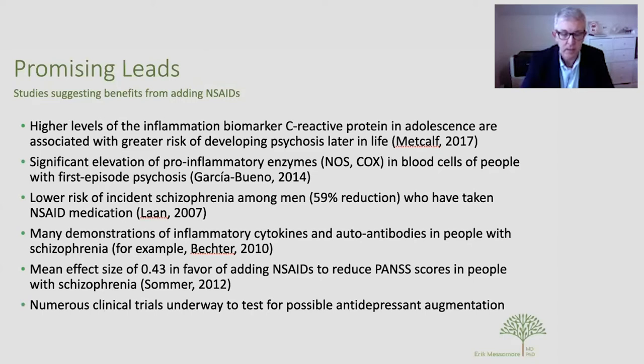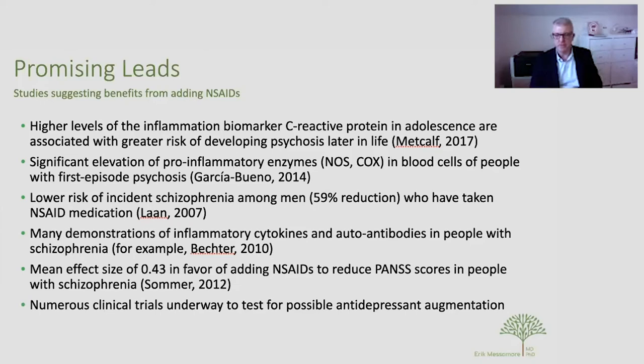Several studies show that markers of inflammation predict the development of psychosis. In a fairly large study by Metcalf and colleagues, looking at C-reactive protein — a very non-specific biomarker for inflammation — during adolescence, around ages 15 or 16, they were able to predict who by age 27 would be diagnosed with a schizophrenia spectrum disorder. Early life inflammation appears to be associated with higher risk for later life psychotic illness.